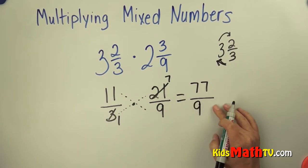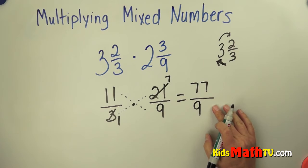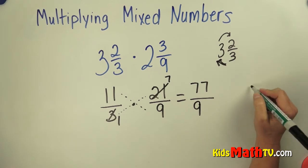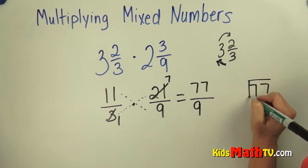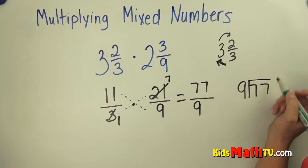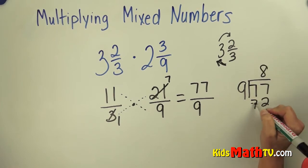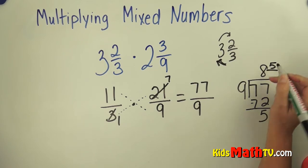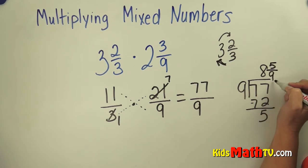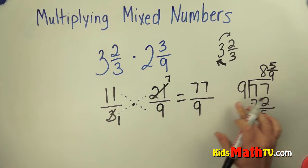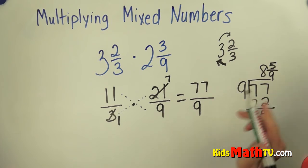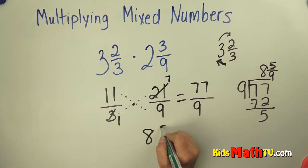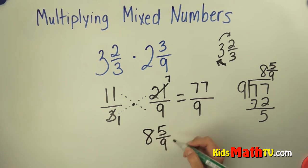Now I have an improper fraction that I need to make into a mixed number by dividing. 77 divided by 9 is 8. 8 times 9 is 72; subtract and I get 5. The 5 becomes the numerator, and the divisor is the denominator, so 77 over 9 is 8 and 5 ninths.